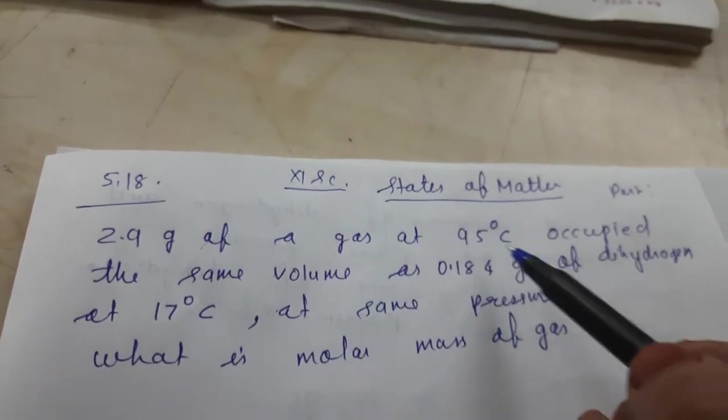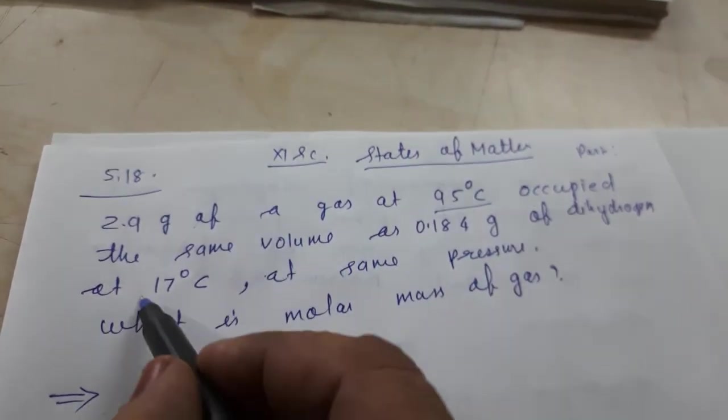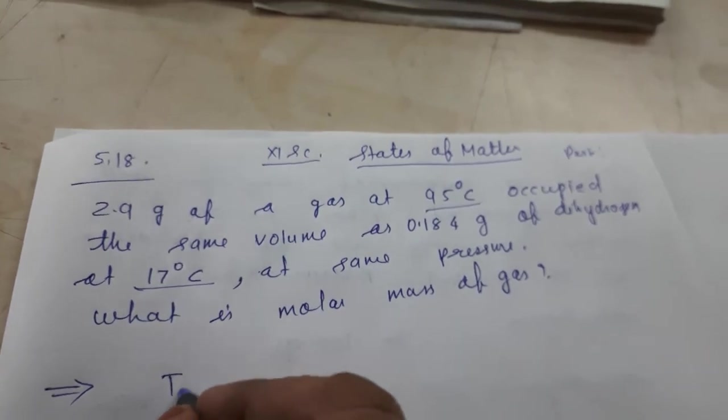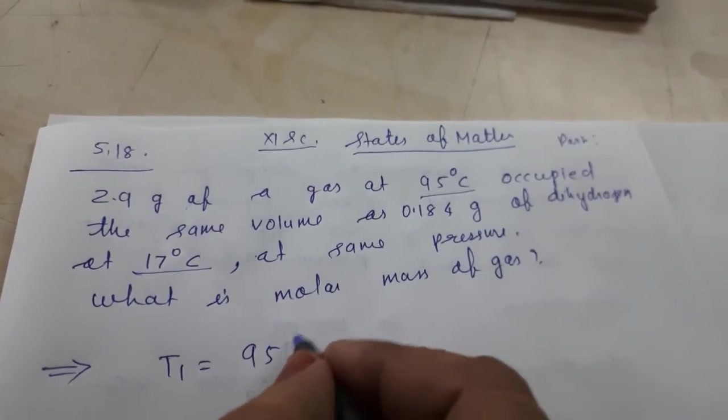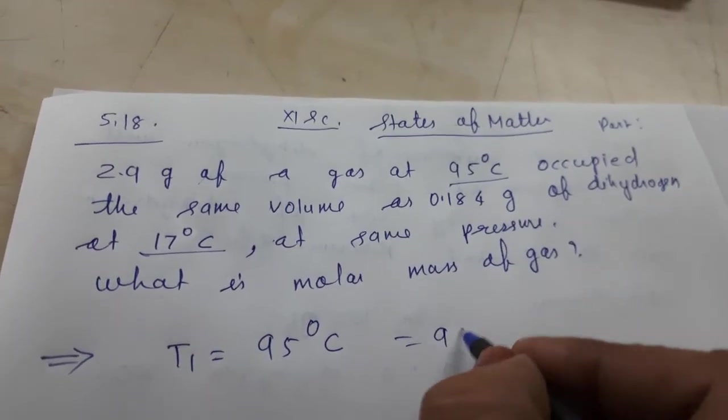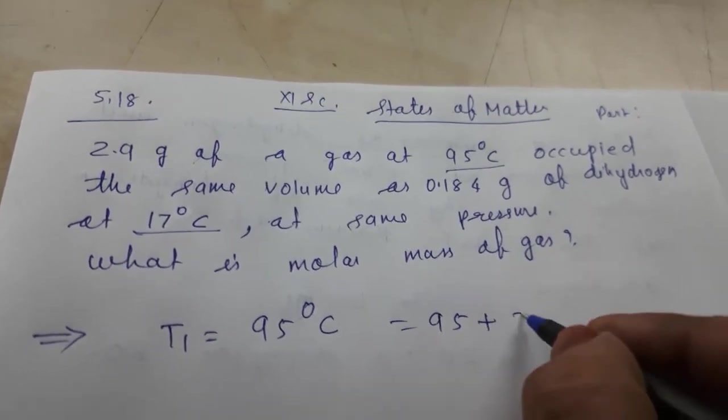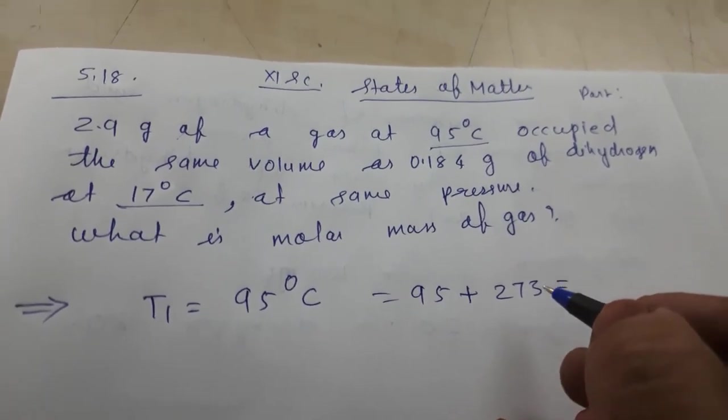So you can see children, there are two temperatures given: 95 degrees Celsius and 17 degrees Celsius. T1 equals 95 degrees Celsius, which equals 95 plus 273. First we will convert it to Kelvin.